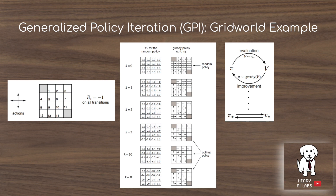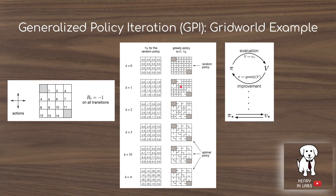The generalized policy iteration algorithm is best understood with a concrete grid world example. We have a grid world where we receive a minus one reward for every state except the gray shaded terminal boxes, which receive zero reward. We initialize our policy to make random up, right, down, left decisions with equal probability, and initialize value estimates with minus one everywhere except zero on terminal states. We then make the policy greedy with respect to the value function estimates — for example, choosing to move left from a minus one state when the left neighbor is a zero state rather than another minus one state.